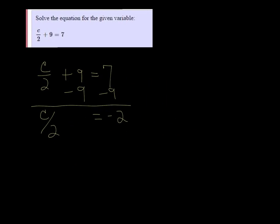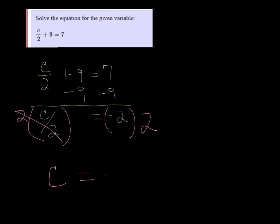Since c is divided by 2, we need to multiply both sides by 2 to undo that operation. So the 2's divide out, and we're left with c equals negative 4.